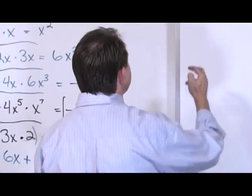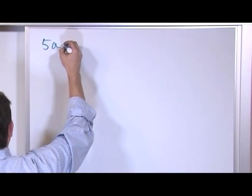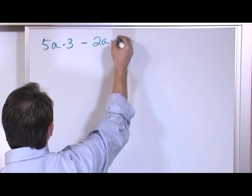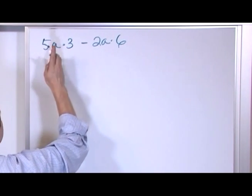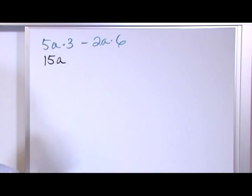Let's keep doing some more problems, I think you'll get the hang of it. Let's say we have 5 times a times 3 minus 2a times 6. So for this first thing, we have 5 times 3 is 15 and a is just hanging out, so we're going to bring him along, a.